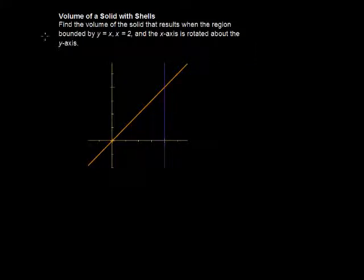Our example asks us to find the volume of a solid that results when the region bounded by y equals x, and the line x equals 2, and the x-axis is rotated about the y-axis.